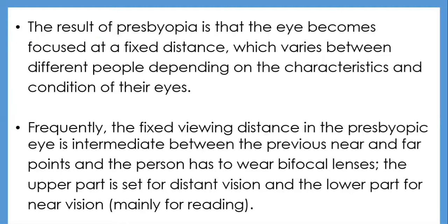Presbyopia results in the eye becoming focused at a fixed distance, which varies between people. Frequently, the fixed viewing distance is intermediate between the previous near and far points, and the person has to wear bifocal lenses — the upper part set for distant vision and the lower part for near vision. Bifocal or trifocal lenses can restore a kind of stepwise accommodation. If workplaces are adequately lit, the depth of field of the eye is increased, lowering the requirements for accommodation. This explains why good lighting is very important in facilities used by older people.